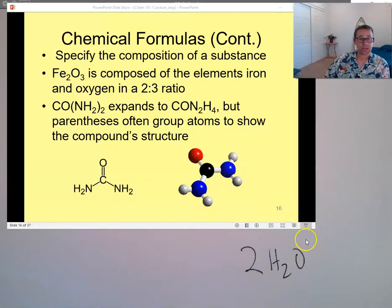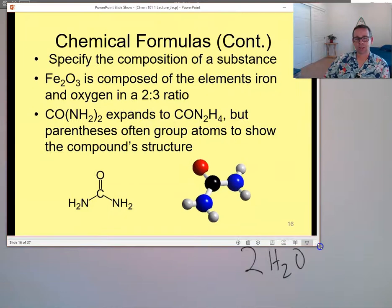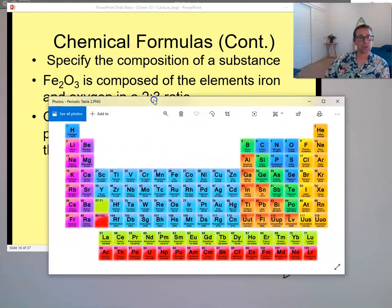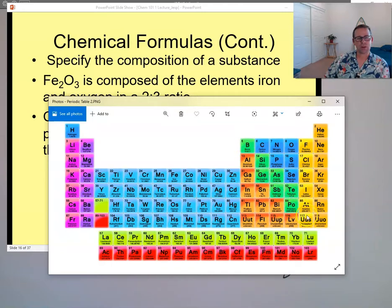Last class, we talked about chemical formulas a little bit. We talked about different kinds of compounds — molecular and ionic compounds. We had the periodic table to help us. The green staircase separates metals from non-metals, and the right side contains our non-metals.